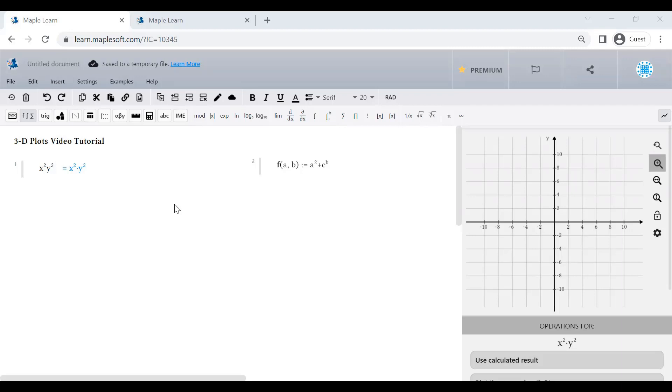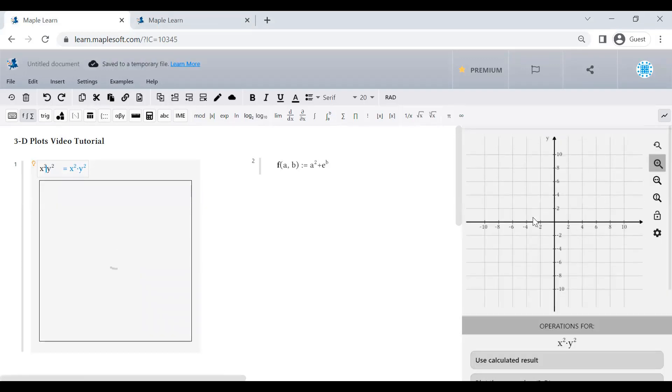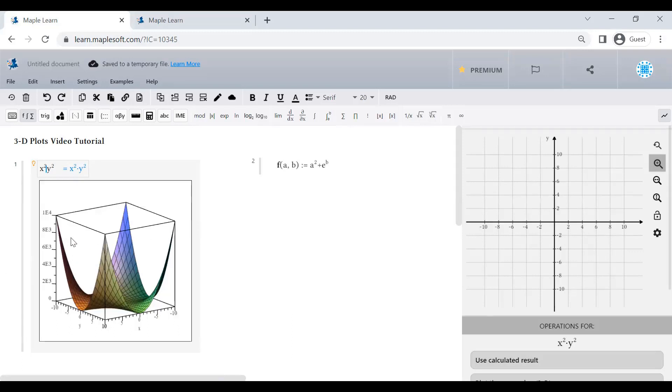You can choose any two variable names you want and write it as you would any other function in MapleLearn, as is or using a function definition. Then, to plot the function, click on it and scroll down to plot the expression 3D in the context panel. The 3D plot will not appear on the graph to the right, but rather it will insert a new plot window in your document directly below the function.